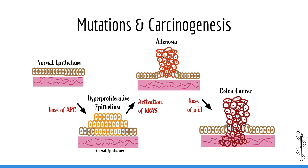The last principle to cover is that it usually takes multiple mutations in different oncogenes and tumor suppressors for cancer to develop. It is very rare for a single mutation in a single oncogene or tumor suppressor to promote carcinogenesis. This principle is best shown in the classic adenoma-carcinoma pathway for colorectal cancer, where a series of mutations in various oncogenes and tumor suppressors must occur before colon cancer develops. A single mutation such as loss of APC does not lead to cancer — mutations in APC, KRAS, and P53 must all occur in the same cell.